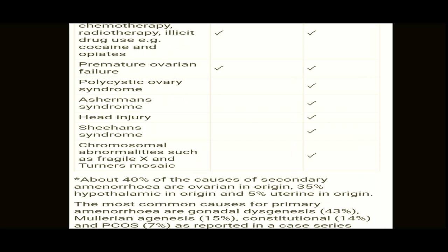The most common cause of primary amenorrhea is gonadal dysgenesis at 43 percent. Müllerian agenesis is next, and constitutional delay and PCOS are the least common causes of primary amenorrhea. So primary amenorrhea is basically problems with the gonad.